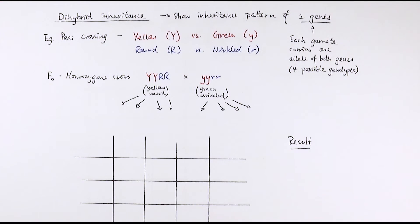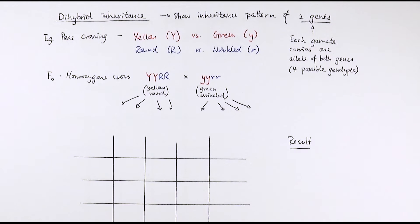In this video, we'll be looking at dihybrid inheritance, where we can look at the inheritance pattern of two different genes. In a previous video, I talked about monogenic inheritance showing one single gene, which you would have also come across at GCSE level. But for dihybrid, it works exactly the same way, except the Punnett square is bigger because we need to show different types of allele combinations or gametes formed, since we're looking at two genes rather than a single gene.